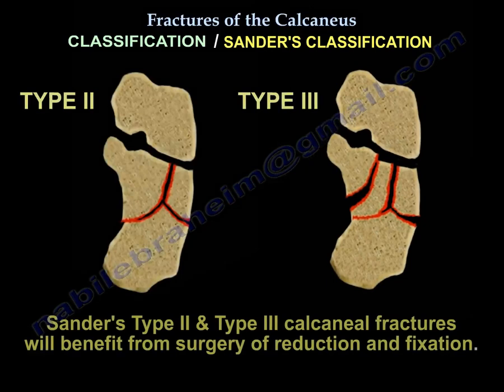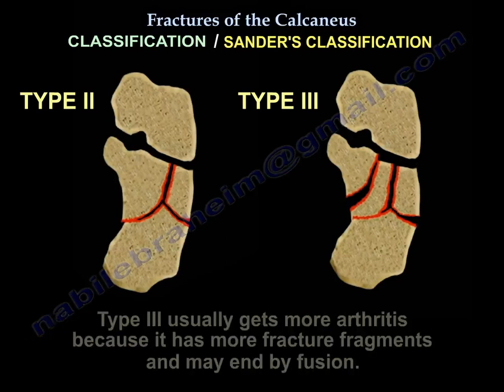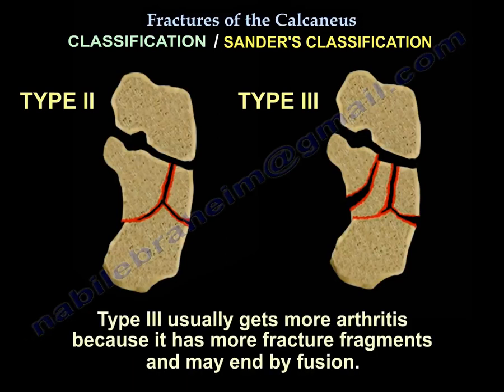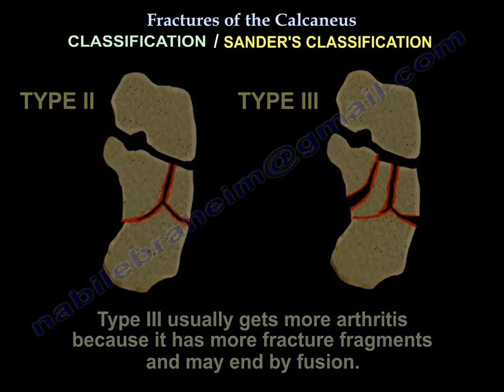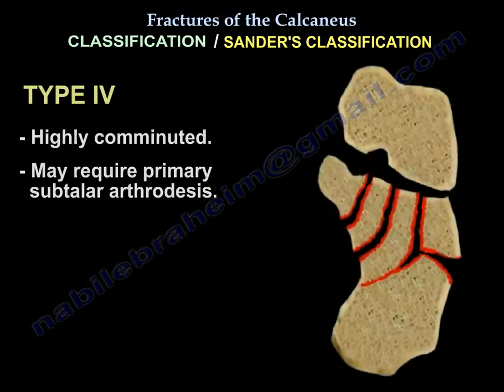Sanders Type 2 and Type 3 calcaneal fractures benefit from surgical reduction and fixation. Type 3 usually leads to more arthritis due to more fragments and may end with fusion. Type 4 is highly comminuted and may require primary subtalar arthrodesis.